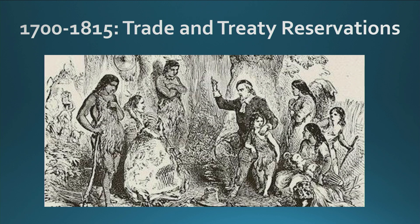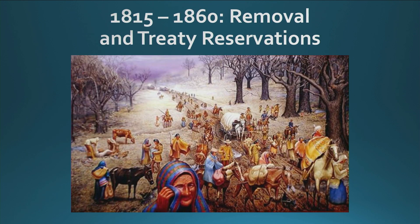Then there's 1815 to 1860, and specifically 1850 to 1860, known as removal and treaty reservations. This is a very important time frame when the United States, east of the Mississippi, as it moves west, allows for the Jeffersonian ideal as the market system expands, allowing Americans to move west across the Mississippi. All of the Native peoples east of the Mississippi are going to be removed to a place called Indian Territory.